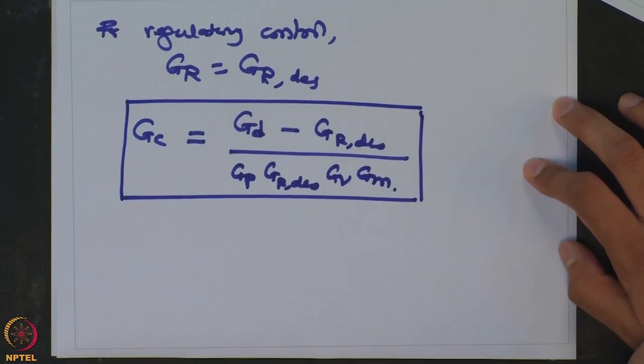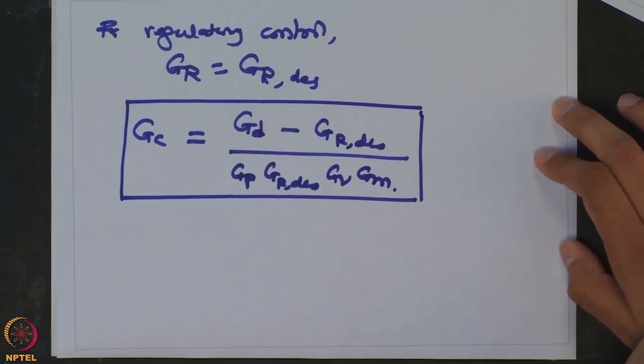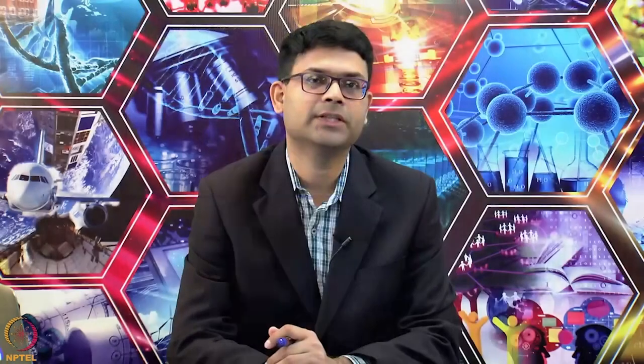So that is the direct synthesis method. It is not really a tuning method — it is a method of synthesizing a controller. We are going to use it to tune a controller such that when you select a certain response as Gs_desired or Gr_desired, the resulting controller comes out to be either a P, PI, or PID controller.